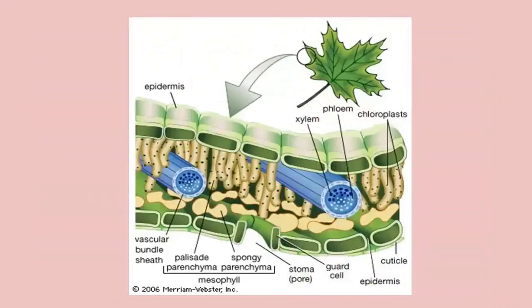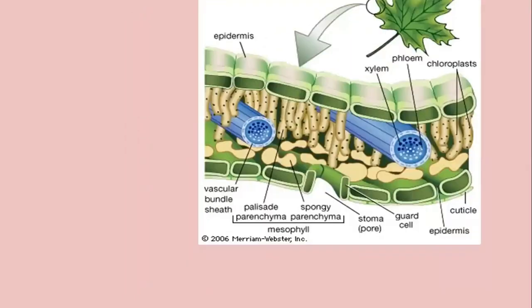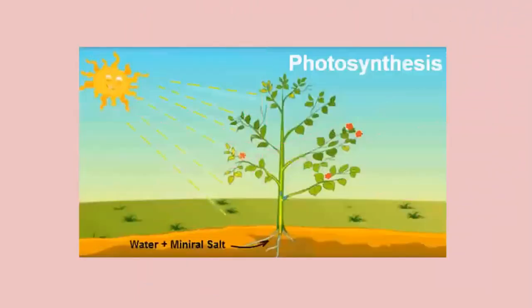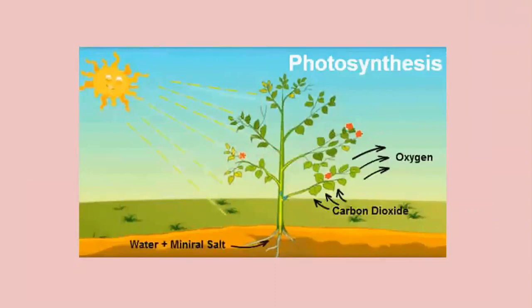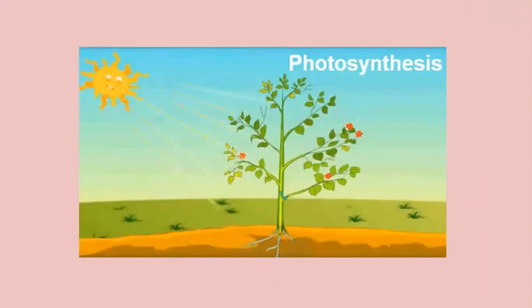The plant has an extensive network of veins — xylem and phloem — within the leaf lamina. Xylem is involved in the transportation of water and minerals into the leaf cells, whereas phloem is concerned with the translocation of prepared food to other parts of the plant. At the end of photosynthesis, the oxygen produced along with glucose is released into the atmosphere through the stomata.